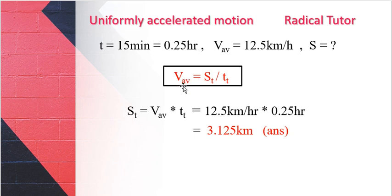Average speed equals total distance over time, so total distance equals average speed times time, which is 12.5 kilometers per hour times 0.25 hours. So the distance is 3.125 kilometers.